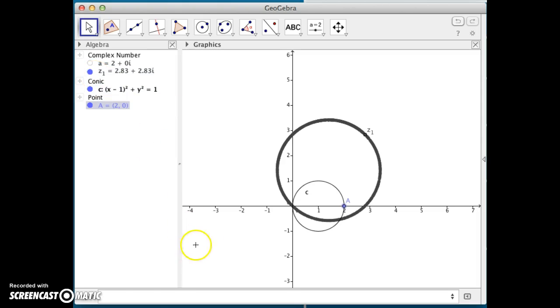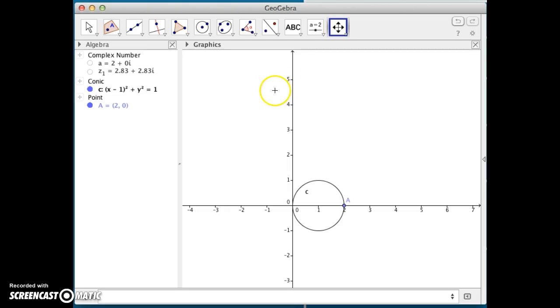The other function, g of x, was to square that. So, let me hide this and move my graphics view a little bit to erase those traces. Let's try this one, A squared.